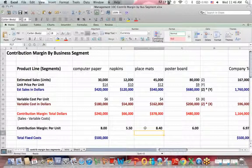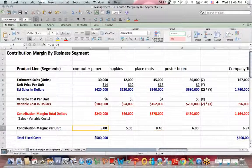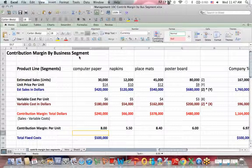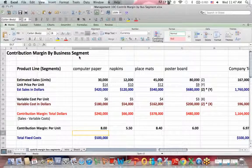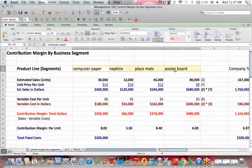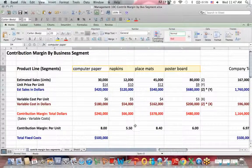Another number that we have that's common is contribution margin per unit. So, looking at the computer paper column, if I take the $240,000 contribution margin in dollars, and I divide it by 30,000 units, I get a contribution margin per unit. Contribution margin per unit allows you to make an apples-to-apples comparison between the profitability of the four segments.